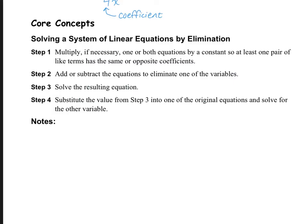When you are solving a system of linear equations by elimination, you need to follow these steps. Step 1 is to multiply, if necessary, one or both equations by a constant, so that at least one of the pair of like terms has the same or opposite coefficients. Step 2, add or subtract the two equations, and your goal is to eliminate one of the variables.